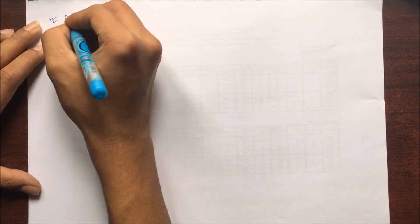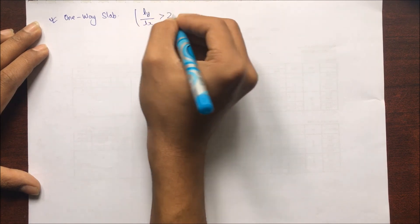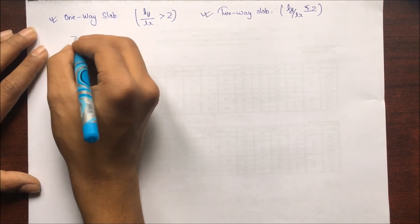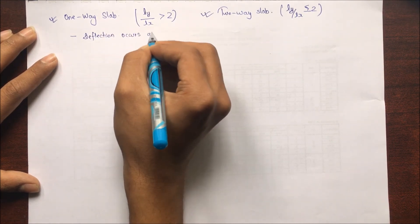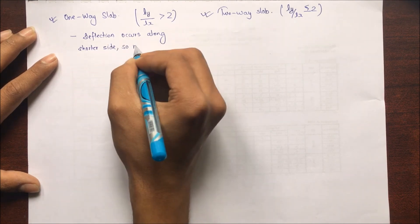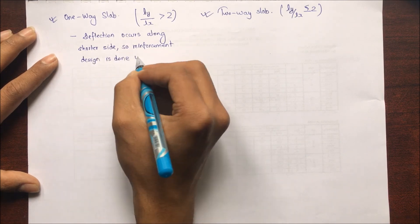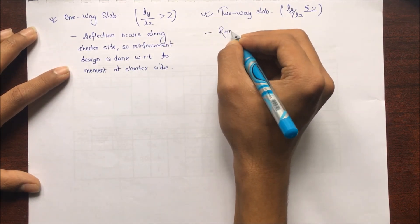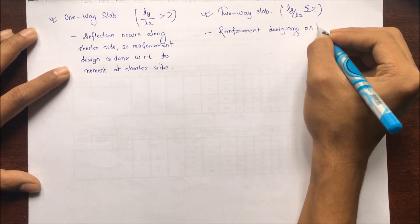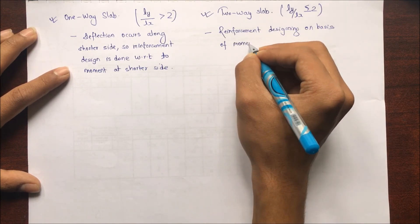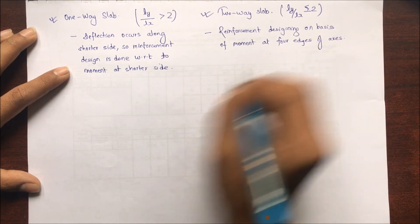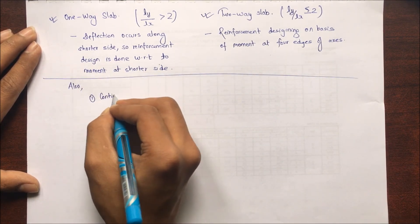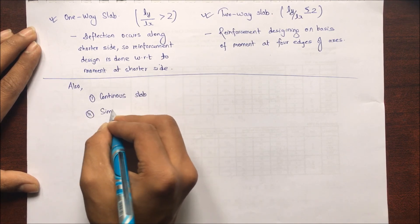In a one-way slab, Ly / Lx is greater than 2. Deflection occurs along the shorter side because maximum load acts there, so reinforcement design is based on the moment at the shorter side. In a two-way slab, reinforcement is designed based on the moment at all four edges, since load distribution in both axes is observed. Other types based on support include continuous slabs, simply supported slabs, and cantilever slabs.